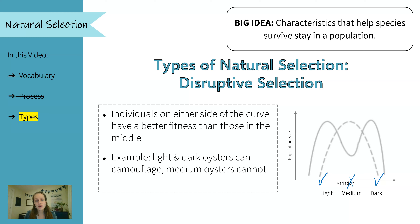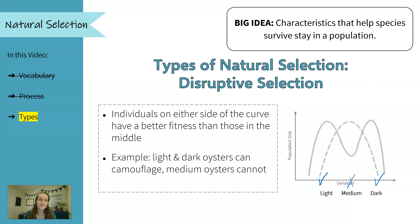Okay, so the most important thing to remember with natural selection is that the environment is what is causing the results. If an organism has adaptations that allow them to survive in the environment, they are better able to survive. And if the environment changes, then the pattern of adaptations will also change, because the environment is what is ultimately affecting species survival. We'll look at more examples in class. If you have questions, pop into office hours or leave them in the comments below.